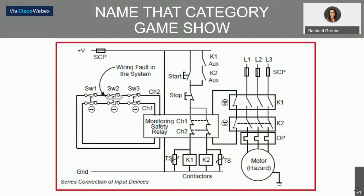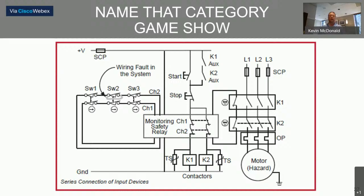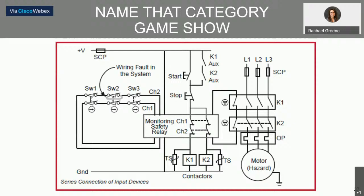Jeremy asks: how do categories relate to PL and SIL? They're part of it — the safety circuits are designed the same way when defining your performance level. There is a general corollary: Category 4 corresponds roughly to PL e, and Category 3 to PL d, but it's not always the case. There are scenarios where Category 3 with very high diagnostic coverage can still achieve PL e. But the general rule is: Category 4 is PL e.